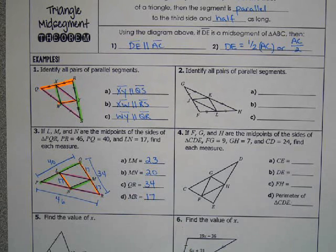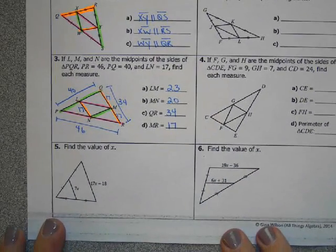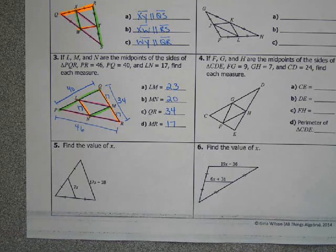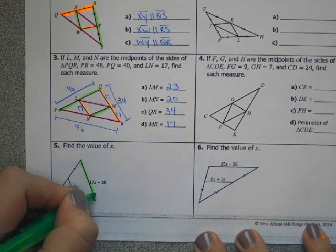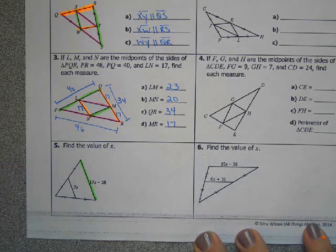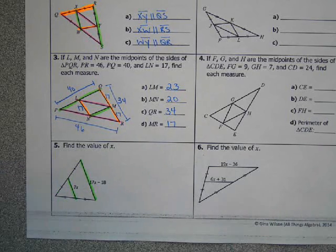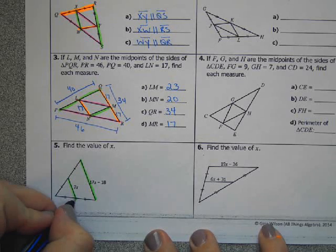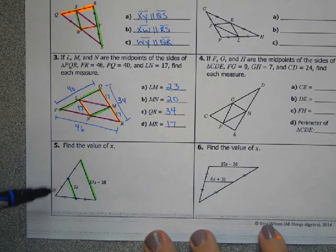And then one final example is we want to find the value of X. So now we're going to use algebra. So our side of the triangle, the whole side, is 17X minus 18. The midsegment is 7X. I know it's a midsegment because these tick marks tell me that this is a midpoint and this is a midpoint. So I'm not assuming, I know by the markings on the triangle.